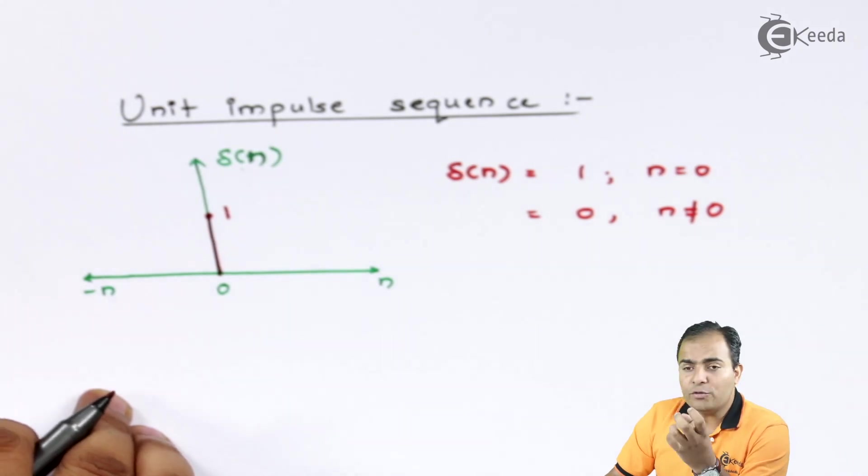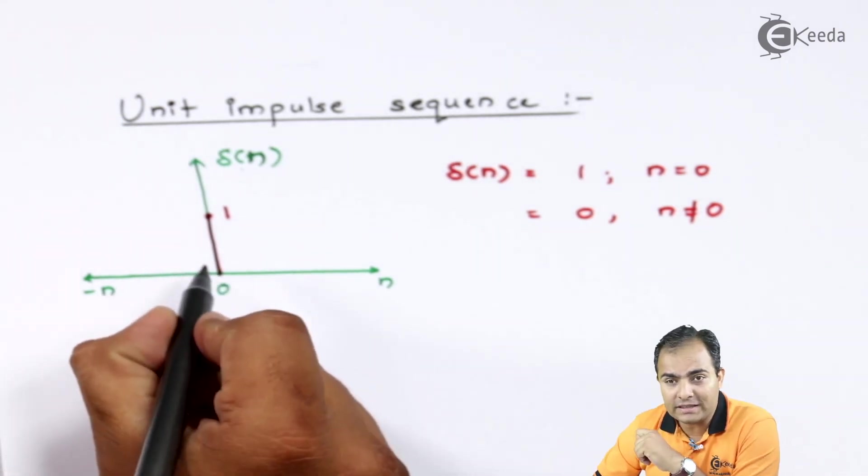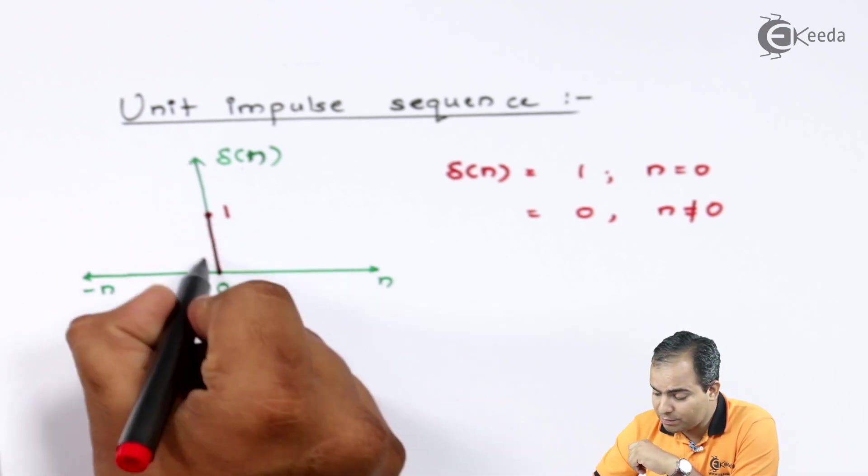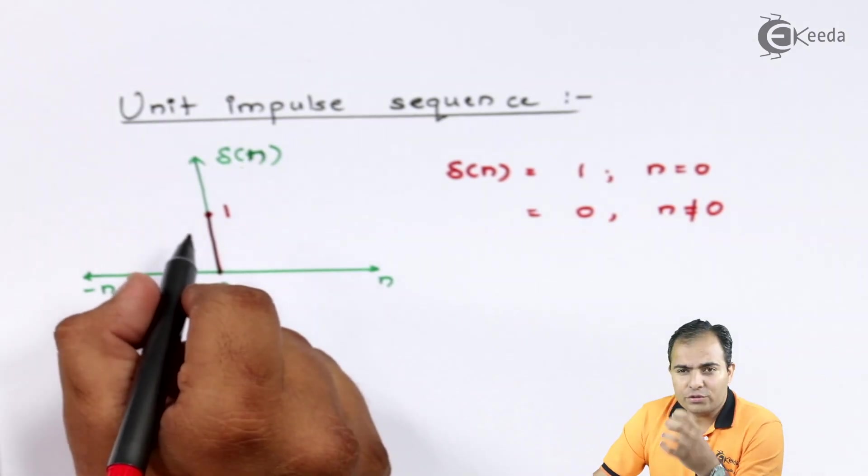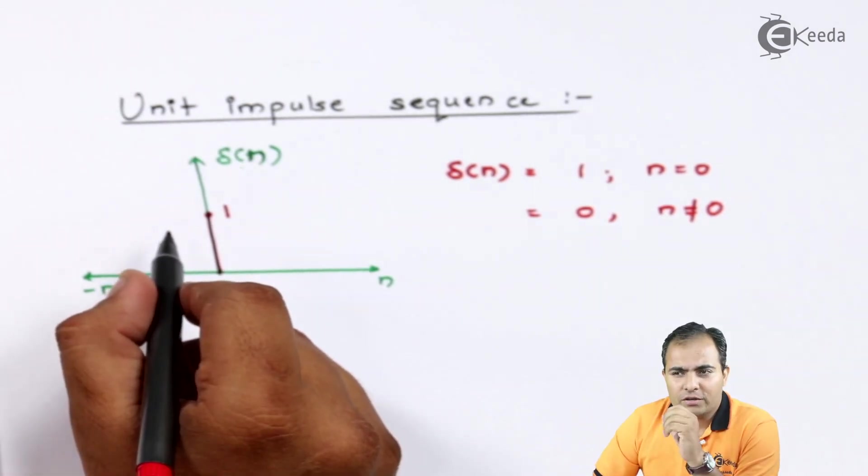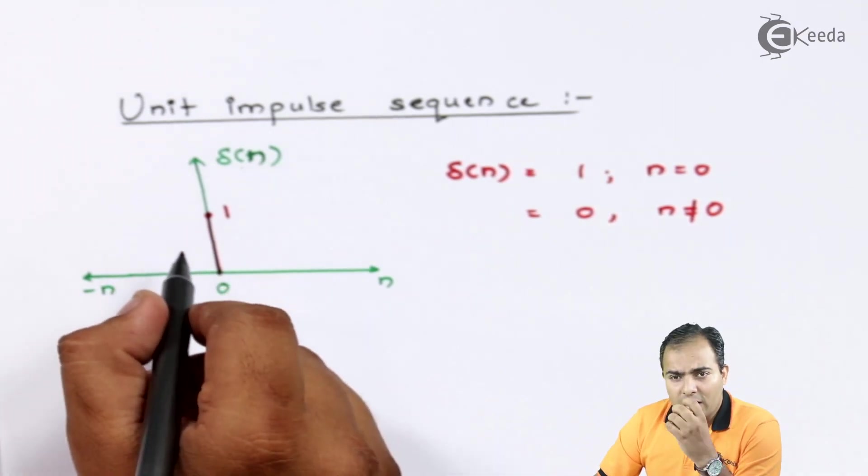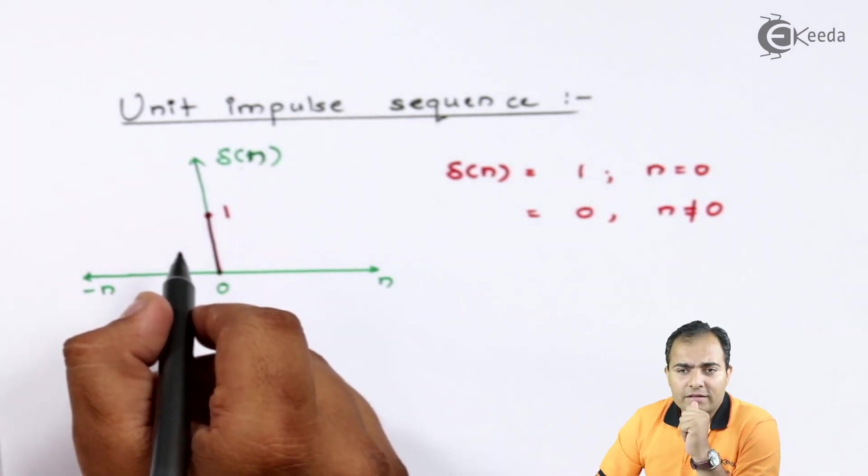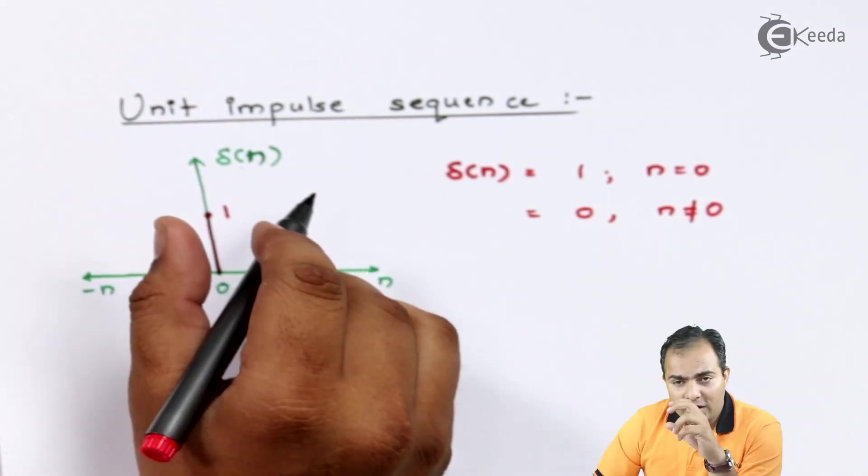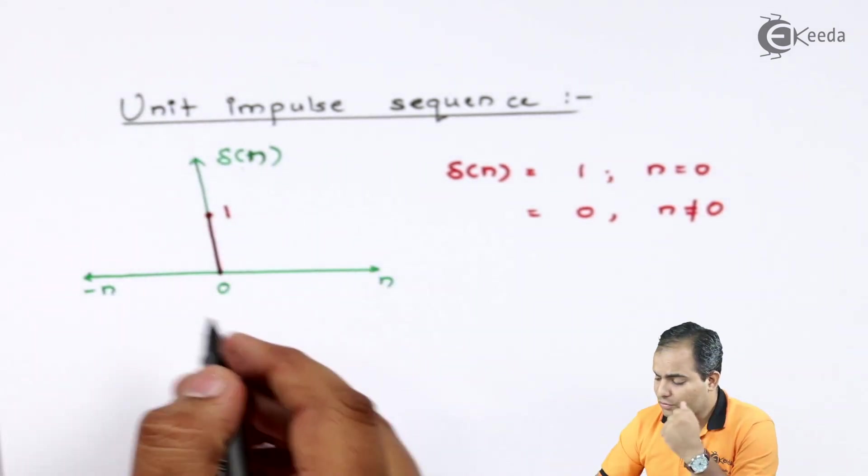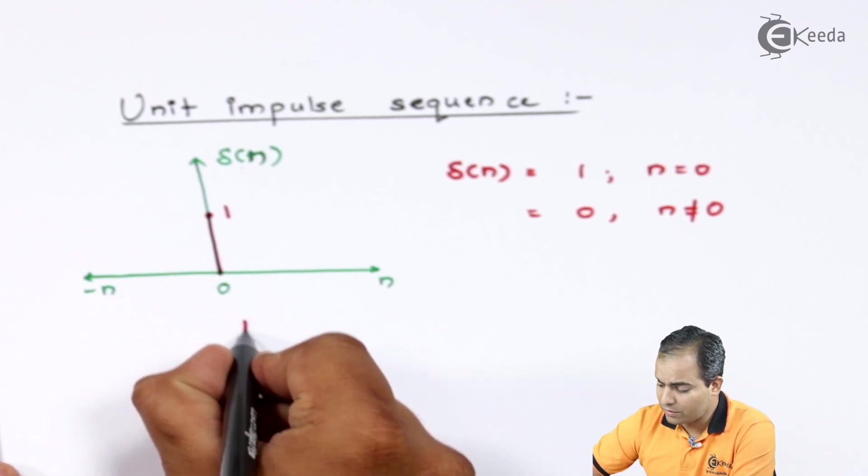If you want to produce a sequence, we are going to shift this time or we are going to shift this pulse by some amount. For that you should know the time shifting property, so you are going to study that part later on. But first of all, how this graph looks like, how this sequence looks like, and how to produce that graph.